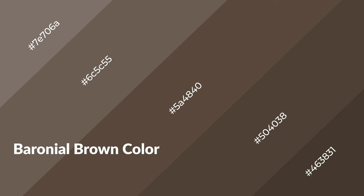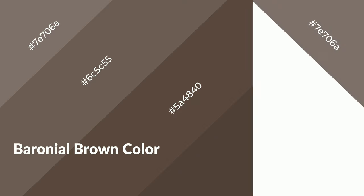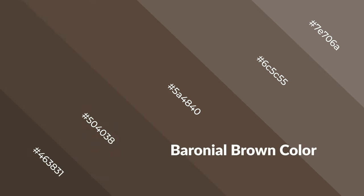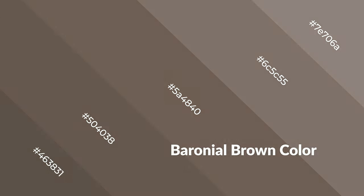Baronial brown is a warm color and it emits cozier and active emotions. Warm colors are symbols of warmth, fire, heat, and sunshine. It also evokes joy, passion, love, and even anger. You can see warm colors used in restaurants and gyms.